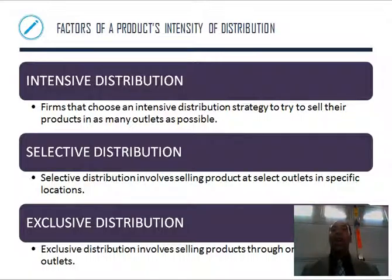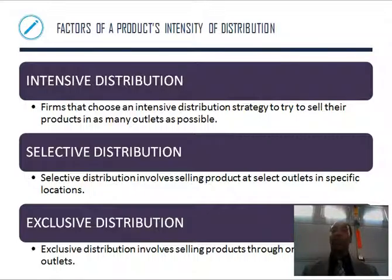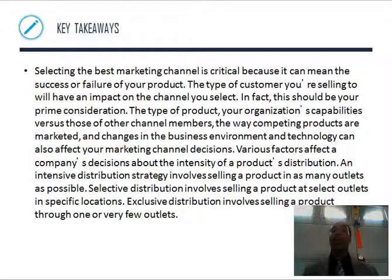Factors of a product's intensity of distribution. Intensive distribution: firms try to sell their products to as many outlets as possible — everybody take it, everybody stock our product. Selective distribution involves selling products at select outlets in specific locations — only certain places. Exclusive distribution involves selling products through one or very few outlets — we're only selling at this place, and that's it. That retailer definitely gets a lot of business because people will be there buying other things from their store.